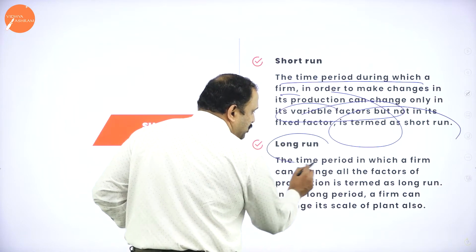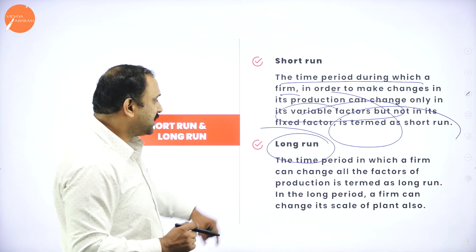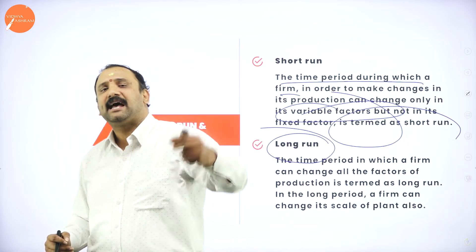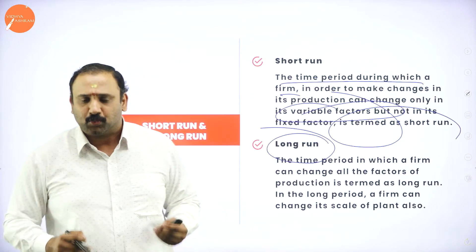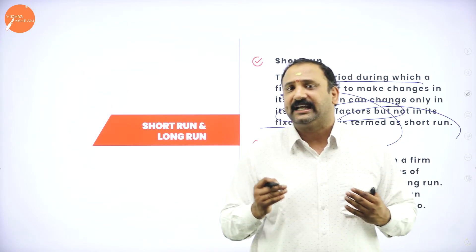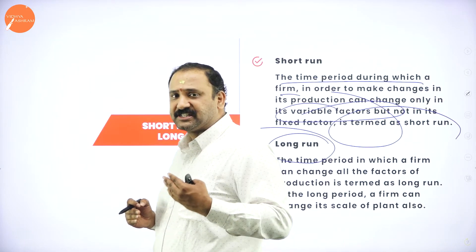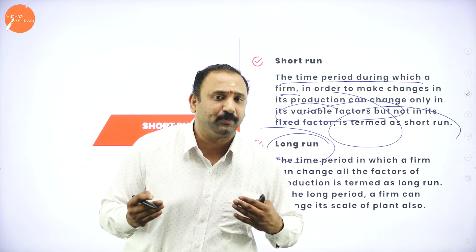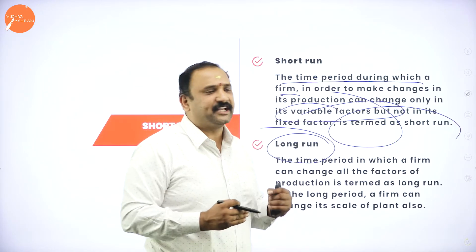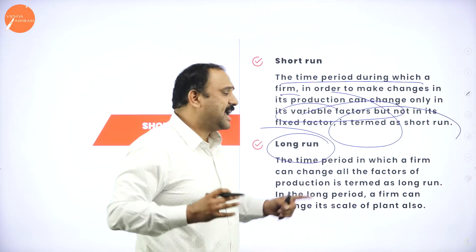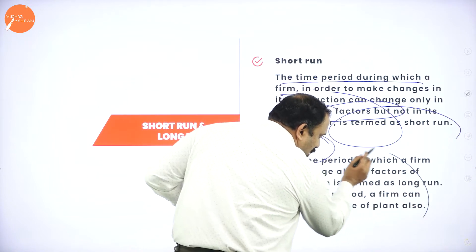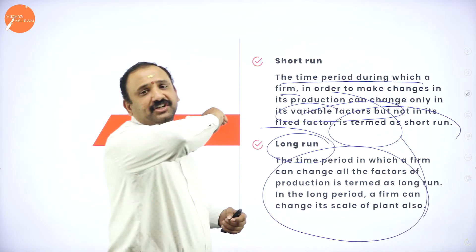On the contrary, the long run is the time period in which a firm can change all the factors of production. For example, as a company with an ambition to produce something two years down the lane, I have a time buffer of 24 months. Within those 24 months, I can bring in a lot of changes — think about what factors are needed and what are not. In the long run, you have the time and all considerations that can be taken into account to scale up the entire production activity.